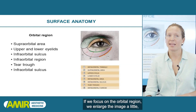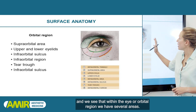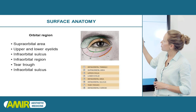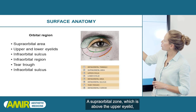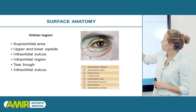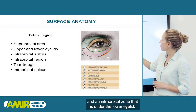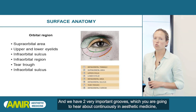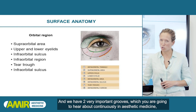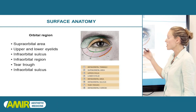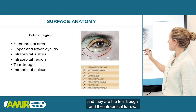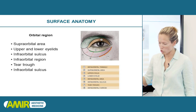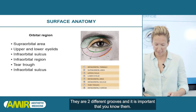If we focus on the orbital region and enlarge the image a little, we see that within the eye or orbital region we have several areas: a supraorbital zone, which is above the upper eyelid, and an infraorbital zone that is under the lower eyelid. We also have two very important grooves that we are going to hear about continuously in aesthetic medicine: the tear trough and the infraorbital furrow. They are two different grooves, and it is important that you know them.